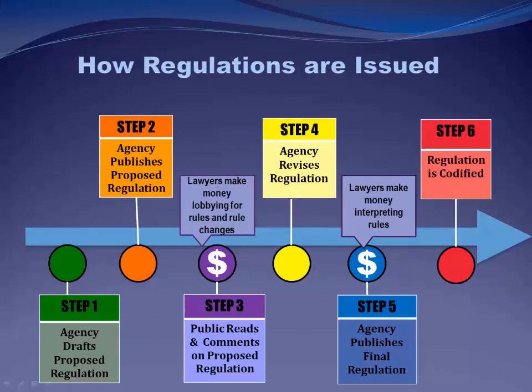Here in a nutshell is how a regulation goes from being an idea to a final regulation codified in the Code of Federal Regulations. Regulations usually come into being after some initiating event: a voluntary act by the agency acting on its own priorities, a reaction to new scientific data or technology, a series of adverse events like traffic accidents or drug reactions, or rulemaking mandated by statute. For instance, when Congress passed the Affordable Care Act, a slew of regulations had to be issued by multiple federal agencies.